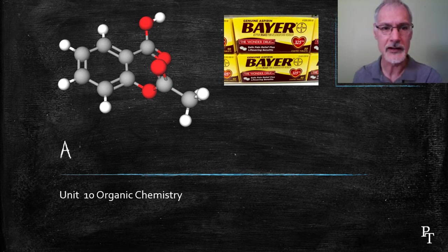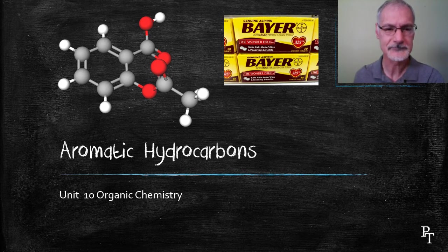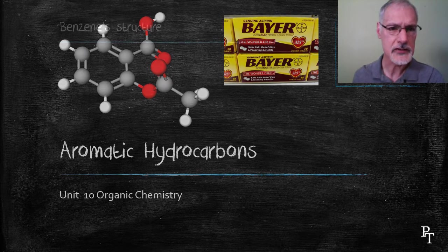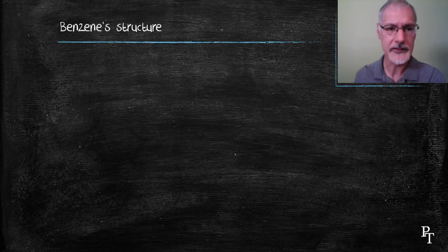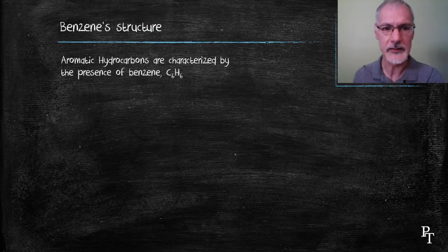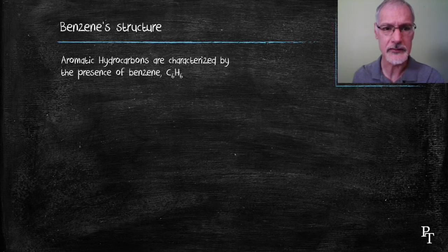Today's program is about aromatic hydrocarbons. Benzene structure is found in all aromatic hydrocarbons. They all contain this molecule of C6H6 and itself has gone through an evolution of structures.